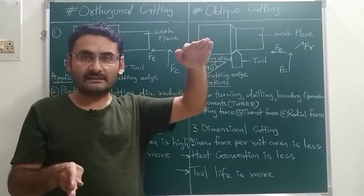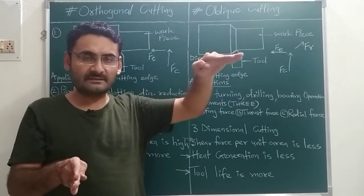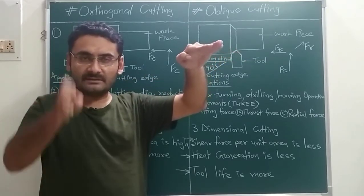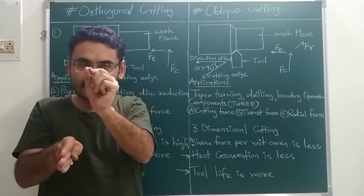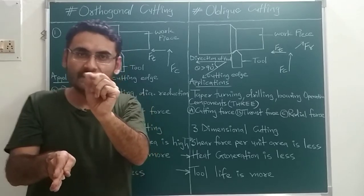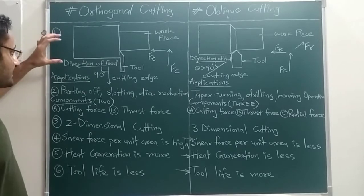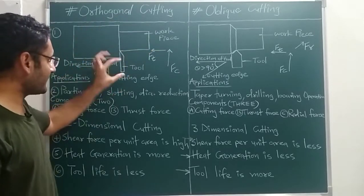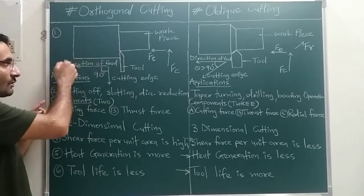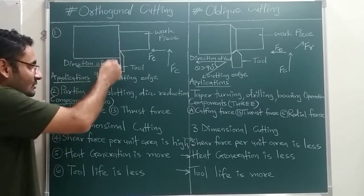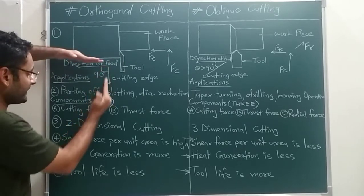For example, on the lathe machine, suppose you are moving your tool in this direction — that means the direction of feed is this and the edge of the cutting tool is like that. So we are talking about this angle. With the help of this angle we can decide which type of cutting method we are using. The tool is moving in the direction of feed, and that is the cutting edge of the tool.